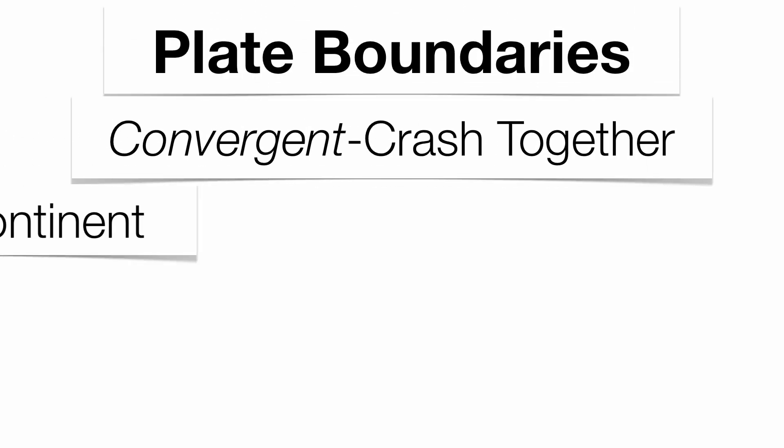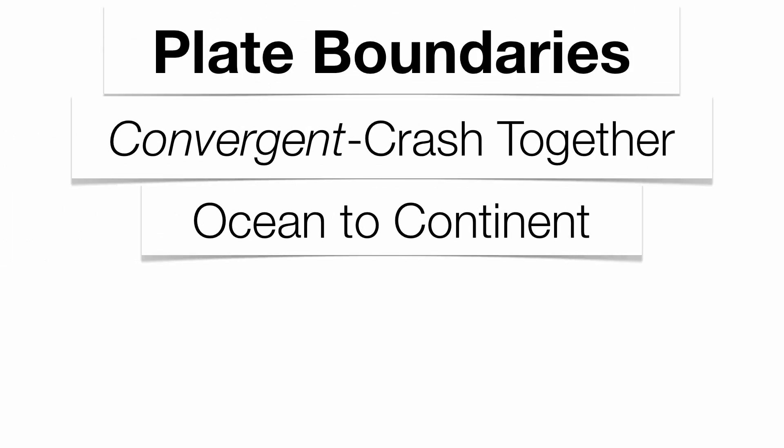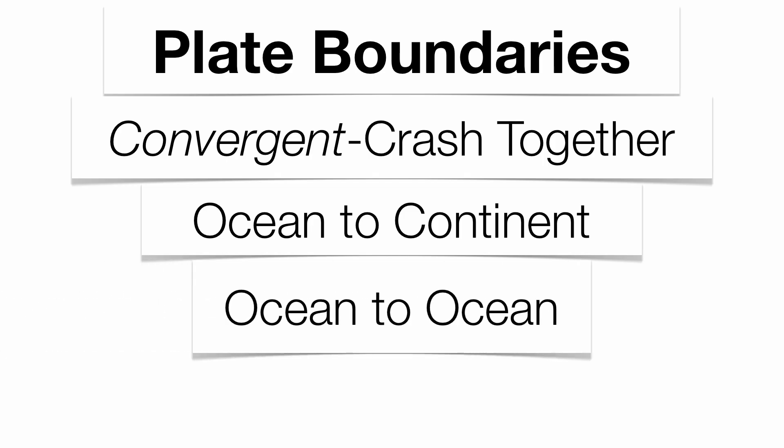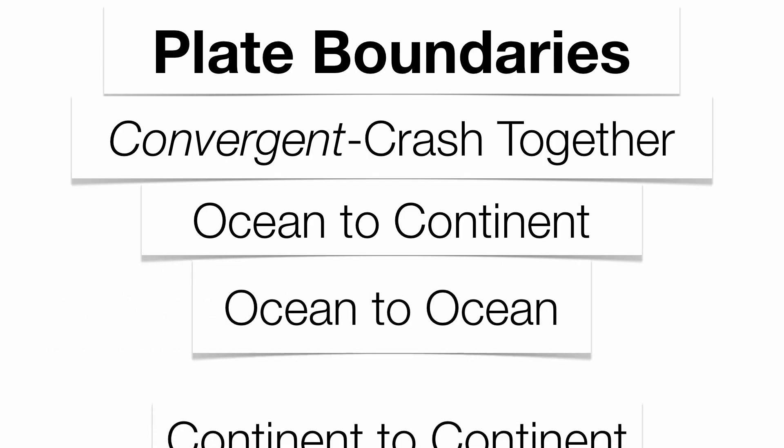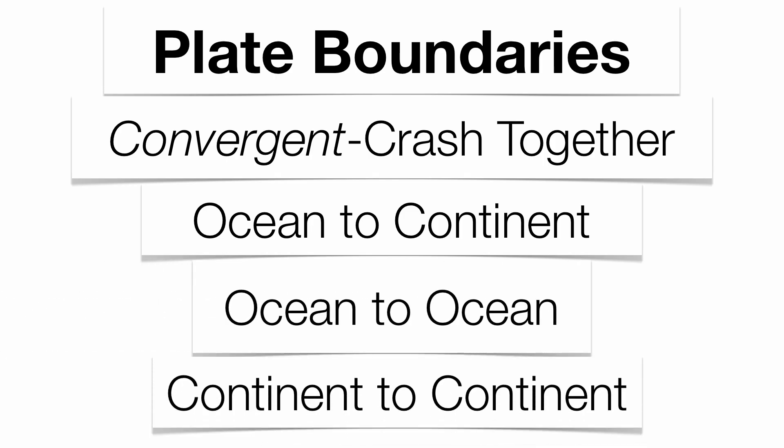When we talk about convergent plate boundaries, we're dealing with three different types: ocean to continent, ocean to ocean, or continent to continent.